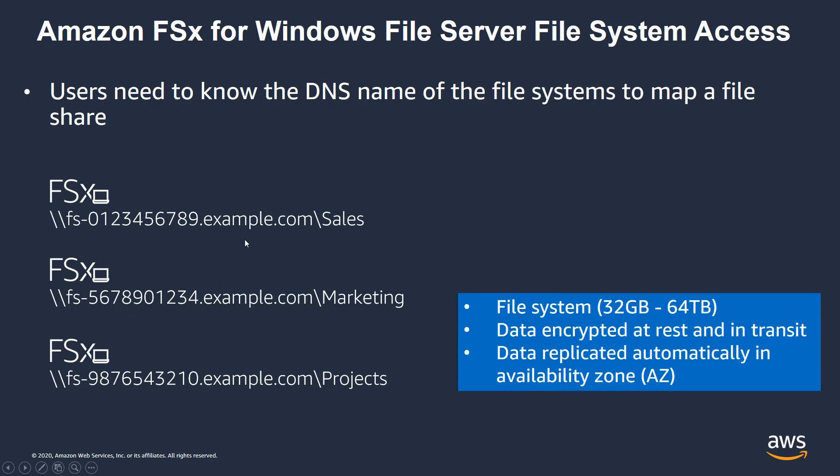Each of these file systems can range in size from 32 gigabytes to 64 terabytes. If you needed more space than that, you could combine multiple file systems together using DFS. I also want to highlight that data on the file system can be encrypted at rest and in transit, and data is replicated within an availability zone. You can also set up an FSx file system to be replicated across multiple availability zones.